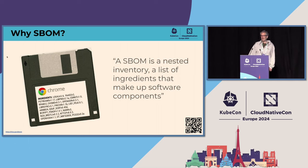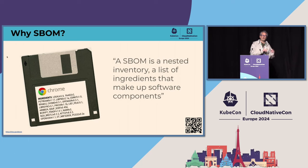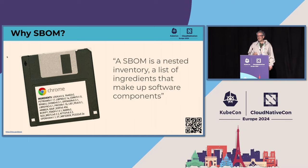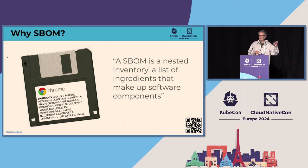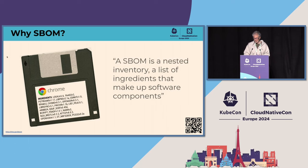An SBOM is a nested inventory — a list of ingredients. Looking at the software supply chain and the supply chain for packaged foods, there's a rich set of parallels. SLSA could be the tamper-proof seals on your food or the food handling processes used in manufacturing. Thinking of an SBOM as a list of ingredients for software is actually a really useful way to think about it.